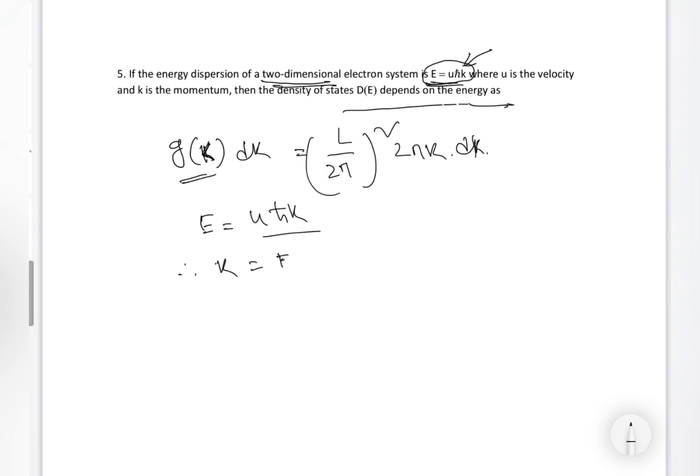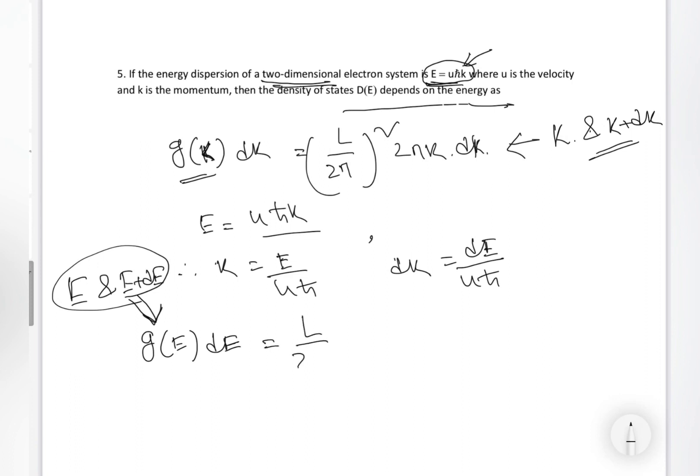And the dispersion equation is given Uħk. Hence, k is actually E/(Uħ). What is dk? dk is, if we derivative it, we will get dE/(Uħ). Similarly, we want to calculate what is G(E)·dE. By the way, we are calculating here the allowed states which are available between k and k+dk. Similarly, valid for E and E+dE. That is (L/2π)² × 2π × E/(Uħ) × dE/(Uħ).